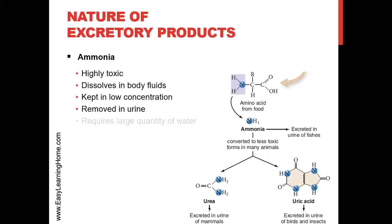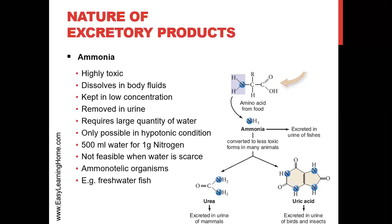Ammonia is a highly toxic compound. In your body fluids it is dissolved in water, but its levels must not increase. The body tries to release it via the blood and it is excreted in the urine. There is a significant amount of ammonia in the urine. To remove ammonia from the body, you need a lot of water — the ammonia must be very dilute.